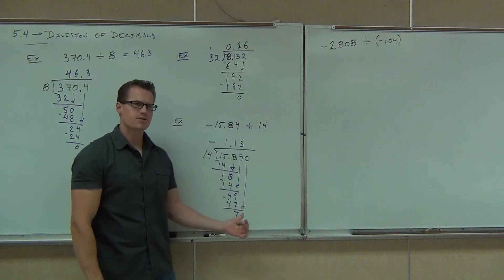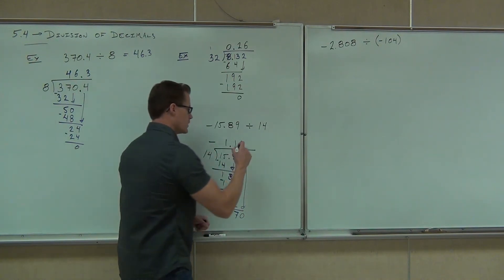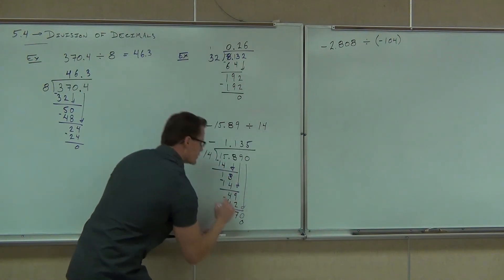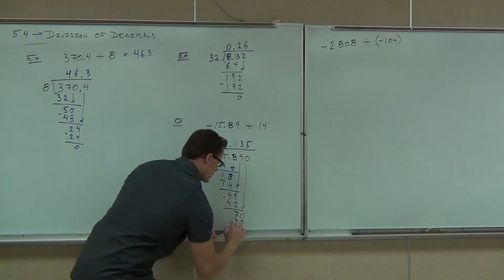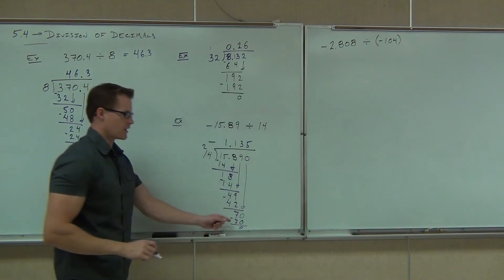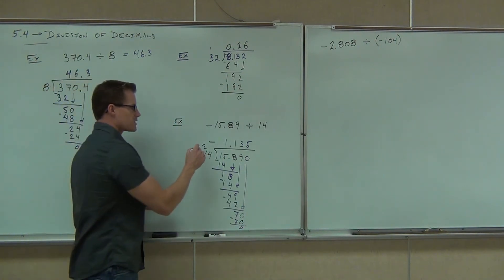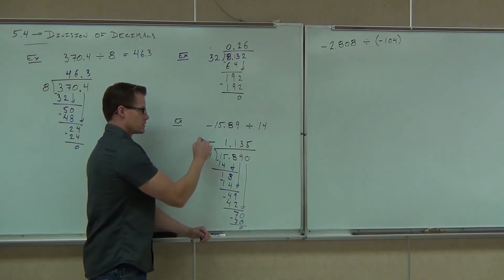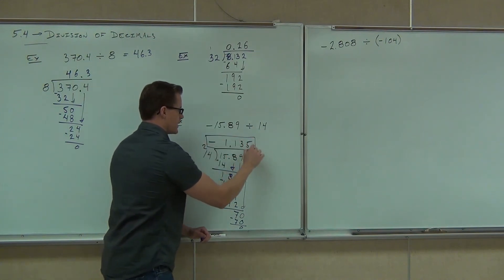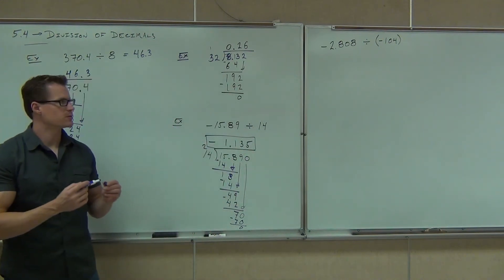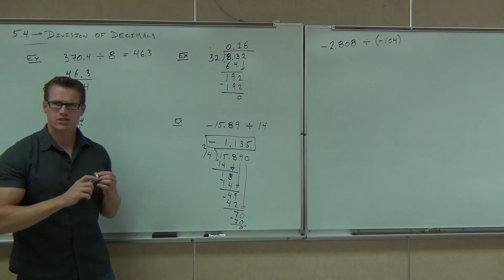Does fourteen go into seventy? Yeah. Five times. Five even? Yes. So we'll put our five, we'll multiply, we'll get the twenty, we get seven, we subtract, we get zero. Sorry, I know that's switched down there. So our final answer is what? Negative one point one three five. That's it. Negative one point one three five.